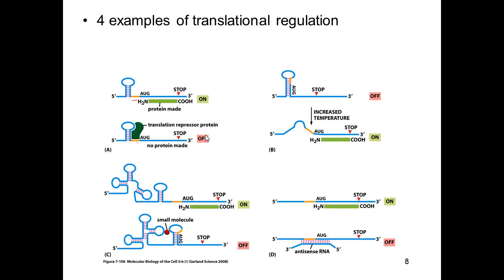Why might you want to do that? If you want to enable a quick response to a certain stimulus, you might want to make the mRNA ahead of time, occupy it, and hold it until you need that protein — then you can make the protein much more quickly when you need it. Another way genes can be regulated is if the ribosomal binding site is within the stem loop structure. For genes involved in heat response, increased temperature would melt the stem structure, exposing the ribosomal binding site and allowing the protein to be made.